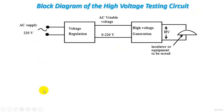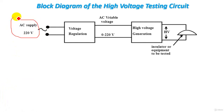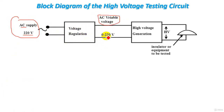This block diagram consists of, first, the AC supply at 220 volts, like the voltage in our homes. Then this voltage is entered to a voltage regulator. The voltage regulator is used to obtain a variable AC voltage, so the output can range from 0 to 220 volts. Then this variable voltage is entered to a high voltage generation stage.